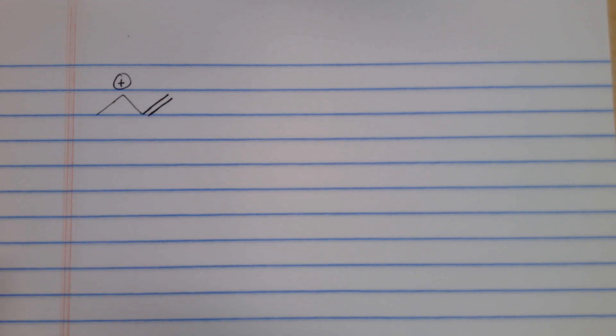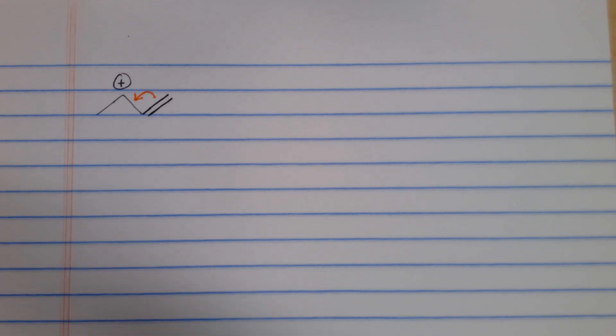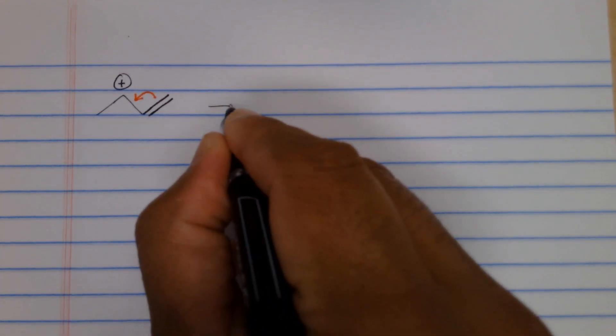So we can draw a resonance structure where we can move the pi electrons, not the sigma electrons, in between two atoms. We'll draw the double headed arrow.